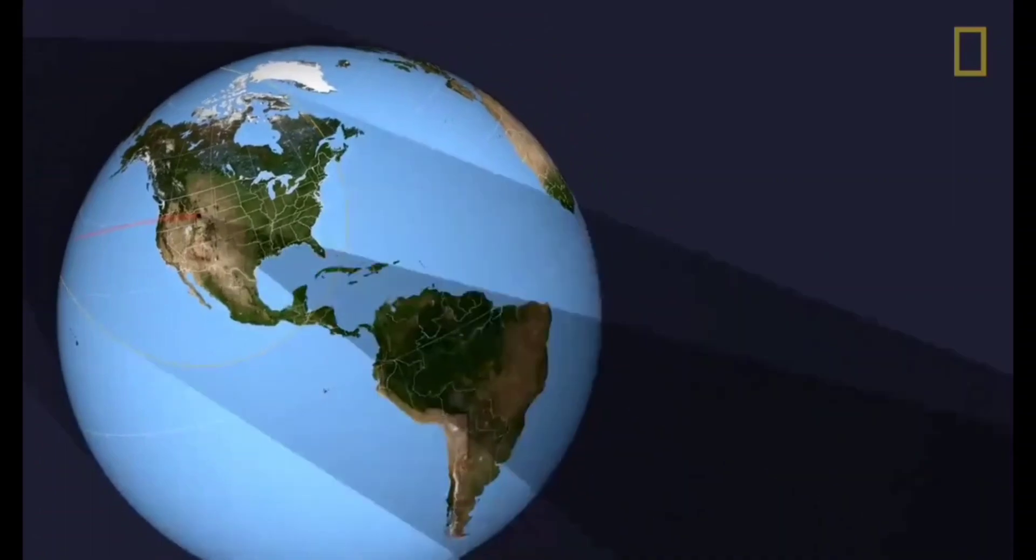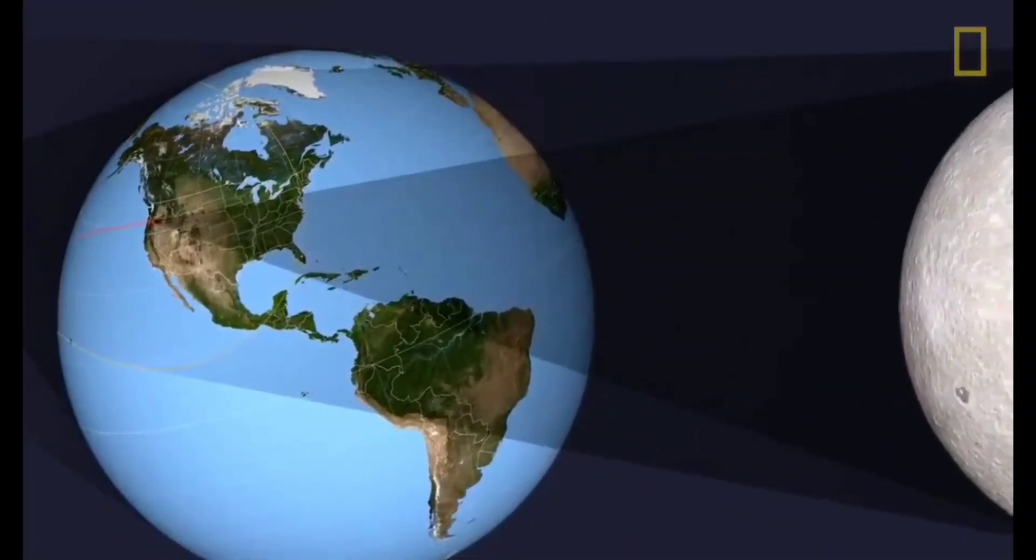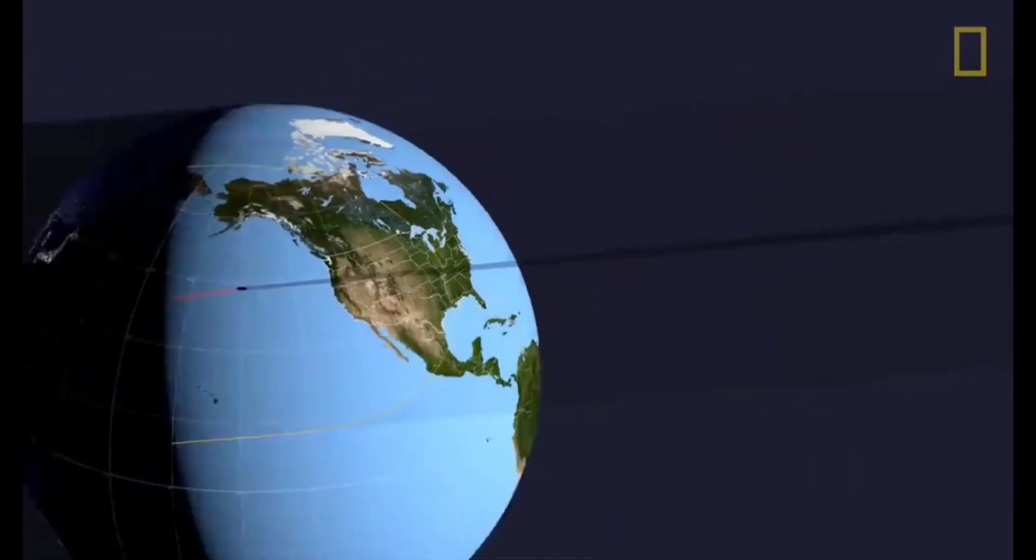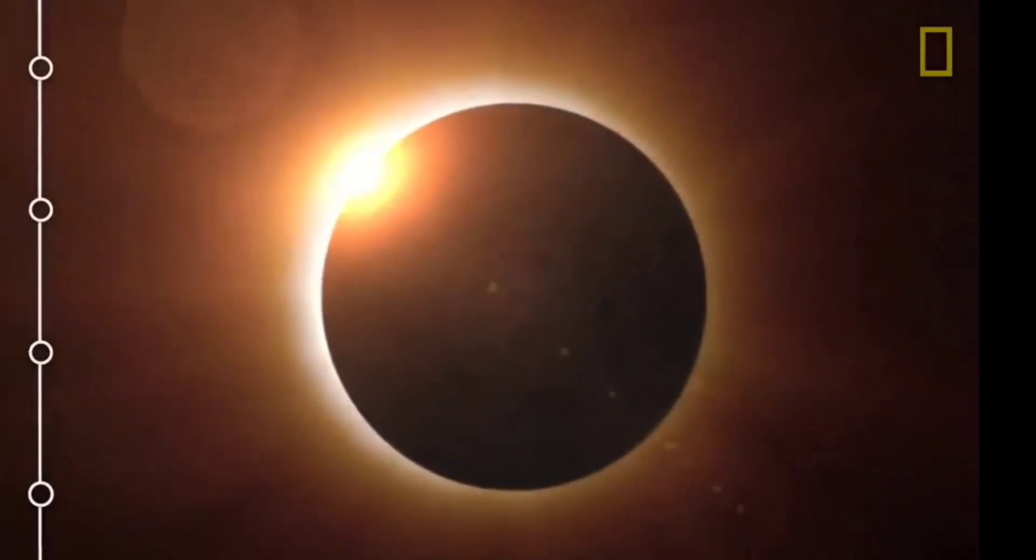So we have different types of solar eclipse that depends on the eclipse magnitude and which part of the shadow falls on the earth.